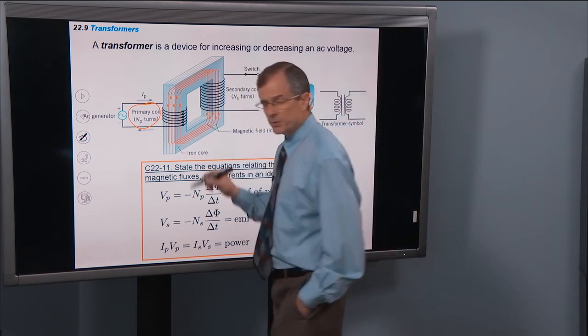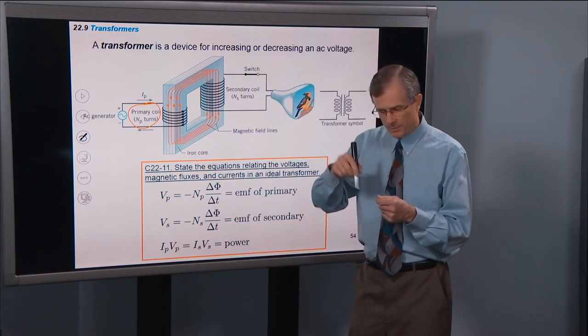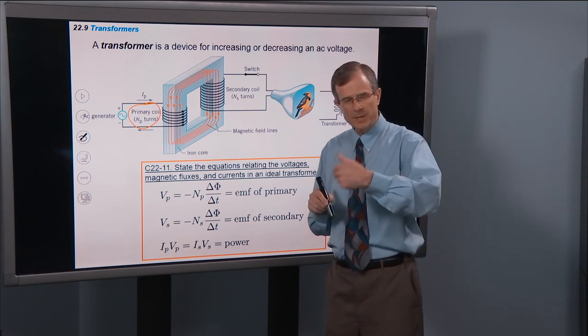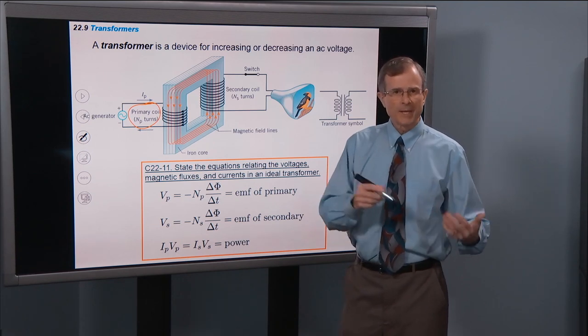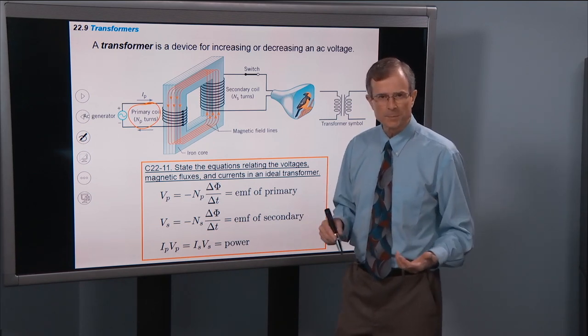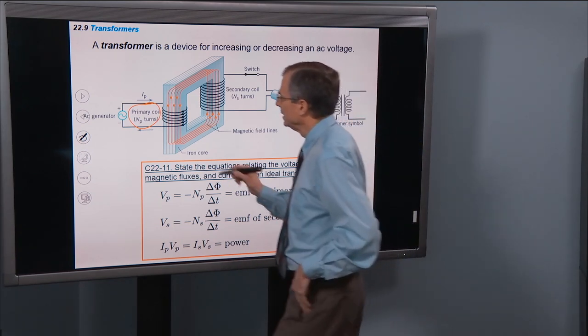The number of turns, as it turns out, the number of turns of wire in the primary and the number of turns in the secondary are important in determining how much the voltage difference is between the primary and the secondary.